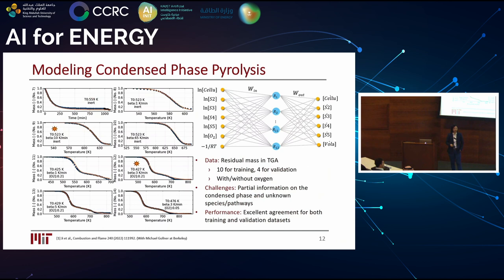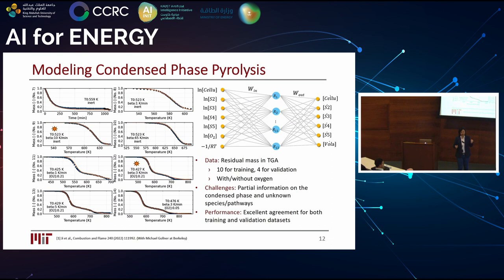In a real case — pyrolysis of biomass — we don't know what's going on. In real experiments, typically using TGA (thermometric analysis), you put fuels into a heating chamber, change the temperature as a function of time, and measure the mass of the system — only the condensed phase. We know what we put in, but not what we get out, only the mass change. The question is whether we can develop a model that captures the system dynamics, predicts intermediate species, and helps fine-tune the pyrolysis process to maximize production.